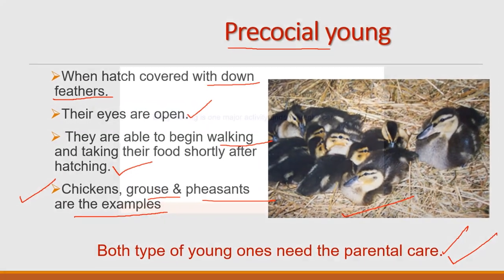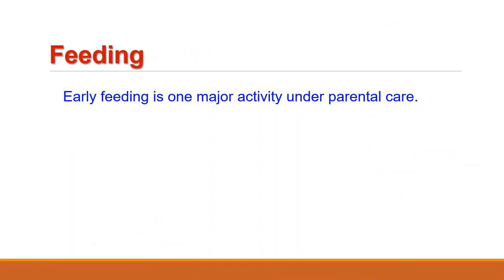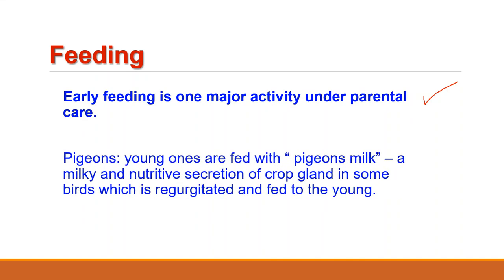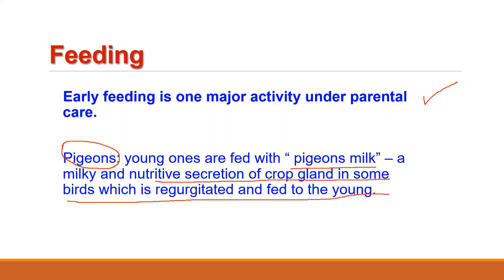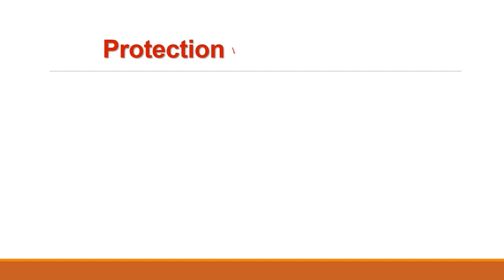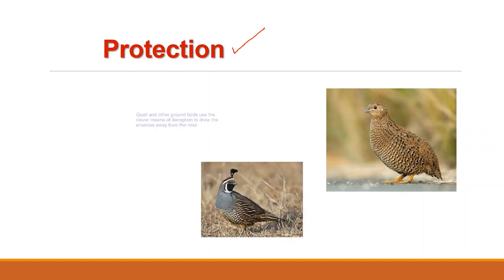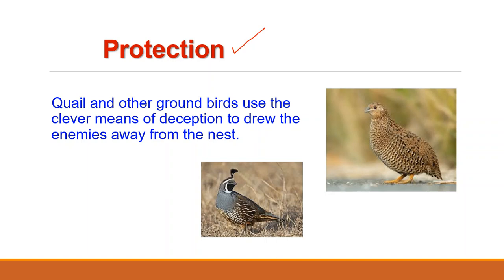Early feeding of the young is one activity under parental care. A good example involving early feeding is seen in pigeons, where the young ones are fed with pigeon milk — a milky and nutritive excretion of the crop glands in some birds — which is regurgitated and fed to the young. In addition to early feeding, young ones are also protected against rain, sun, and enemies. A clever means of deception is used by the quail and other ground-nesting birds to draw enemies away from the nests.